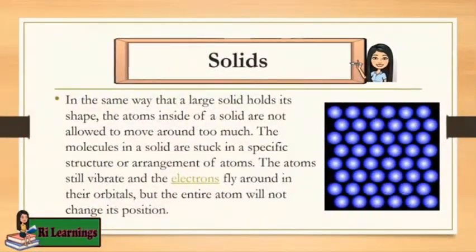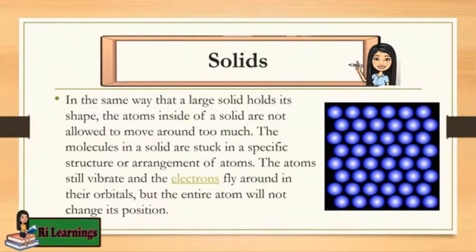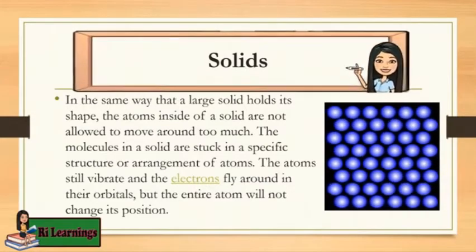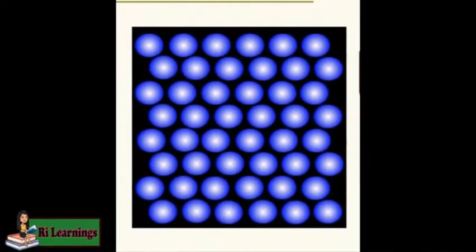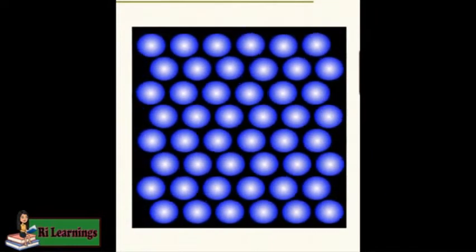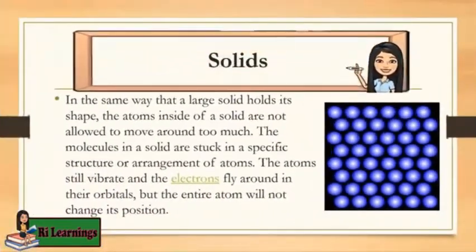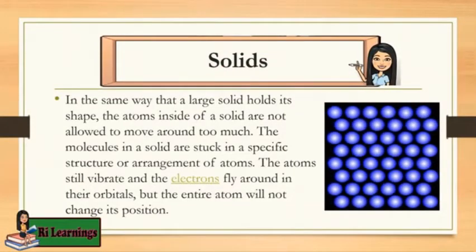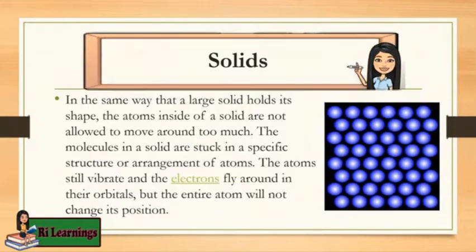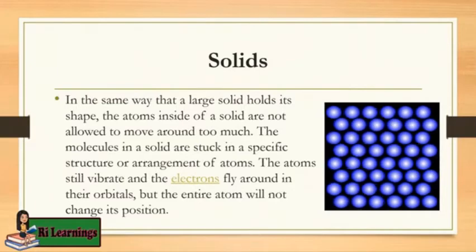The key is that solids hold their shape and they don't flow like liquid. In the same way that a large solid holds its shape, the atoms inside of a solid are not allowed to move around too much. The molecules in a solid are stuck in a specific structure or arrangement of atoms. The atoms still vibrate and the electrons fly around in their orbitals, but the entire atom will not change its position.